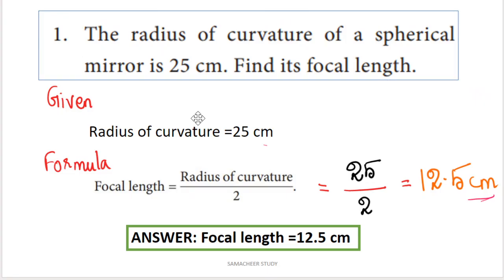First question: the radius of curvature of a spherical mirror is 25 cm. Find its focal length. Given: the radius of curvature is equal to 25 cm. We need to calculate the focal length.